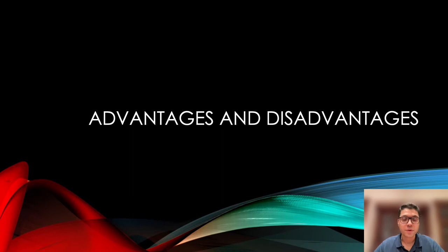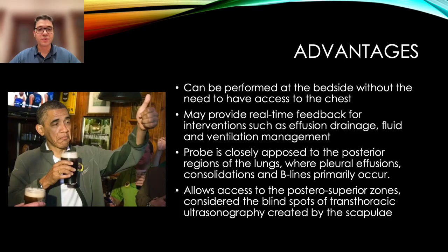So the main advantages of transesophageal lung ultrasound are that it can be performed at the bedside without the need to have access to the chest — most often useful in the operating room. It may provide real-time feedback for interventions such as effusion drainage, fluid, and ventilation management. The probe is closely opposed to the posterior regions of the lungs where pleural effusions, consolidations, and B-lines primarily occur. The probe also allows access to the posterior superior zones of the lungs that are considered the blind spots of transthoracic ultrasonography because of the presence of the scapula.